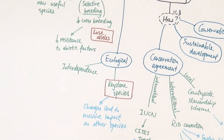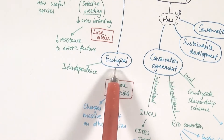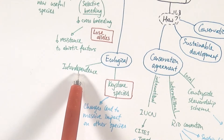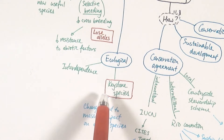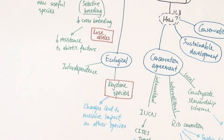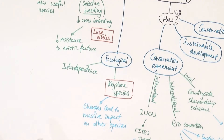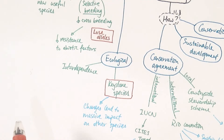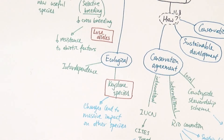The third reason for maintaining biodiversity is ecological. Species are interdependent. Related to this is the concept of keystone species — individuals within a food chain, food web, or habitat that can have a massive impact on other species. If we don't maintain biodiversity, depletion of keystone species would have a far worse knock-on effect than the loss of other species. We need to identify keystone species in different habitats and ensure they are particularly protected.